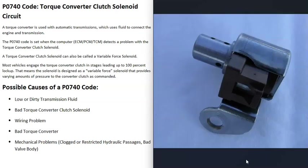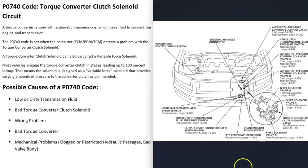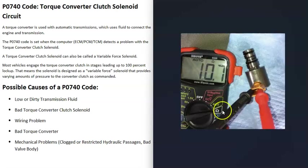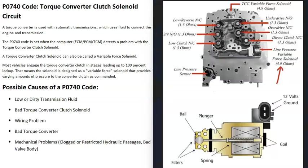The next possible cause is a bad torque converter clutch solenoid or a wiring problem going to it. You'll need a diagram to locate the solenoid, as its position varies by vehicle. To test it, check the rated ohms — for example, 4.9 ohms — set a multimeter to ohms, and see if the reading is within that range. If it's too high or too low, the solenoid needs to be replaced. Also check that the wires are getting voltage and have a good ground. Test everything before replacing the solenoid.